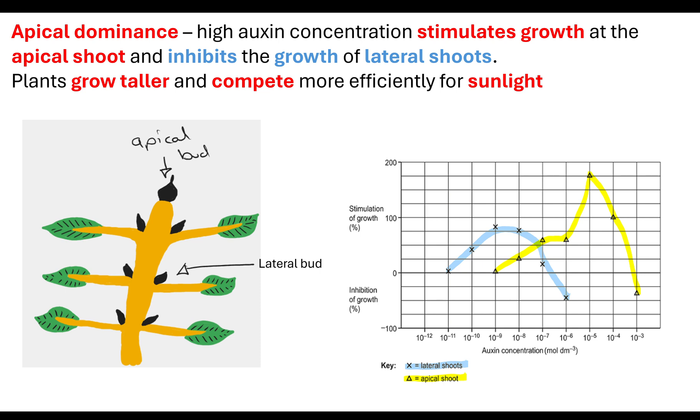They love to give a describe and explain question when they give you a graph. They want you to describe what you see and always give data. Give the data of where there's an increase, where it plateaus, where there's a decrease. Note that on the y-axis, stimulation of growth is above zero, inhibition of growth is below. We can see that after 10 to the minus 7 to 10 to the minus 6 auxin concentration, that's when we see inhibition of lateral shoot growth. It's very much about the concentration of auxin and how that has an effect.